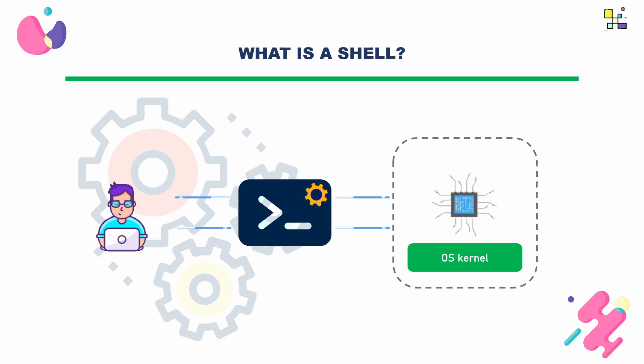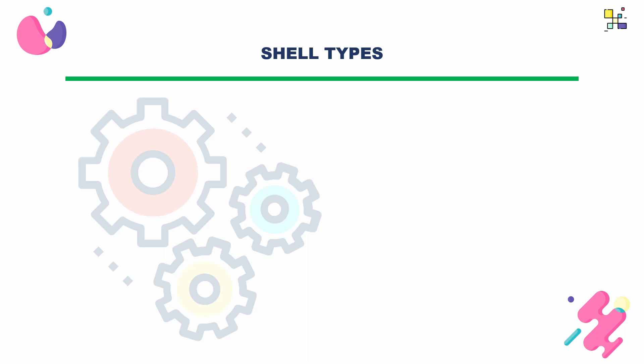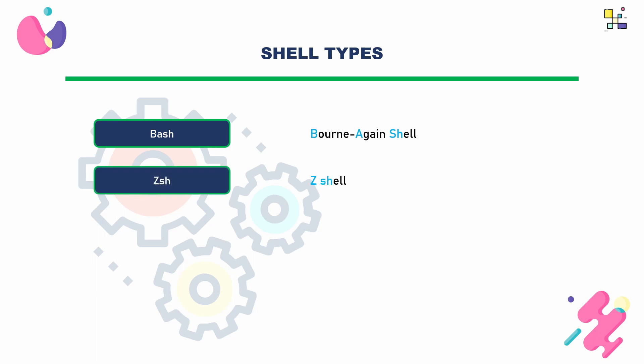Let's see some examples of shells. First of all we have bash, which stands for Born Again Shell. Bash is the default shell on most Linux distributions and is a powerful and versatile shell with a wide range of features. We also have zsh, which is an extended and more feature-rich shell compared to bash, offering a variety of plugins and features which make it very useful and popular.